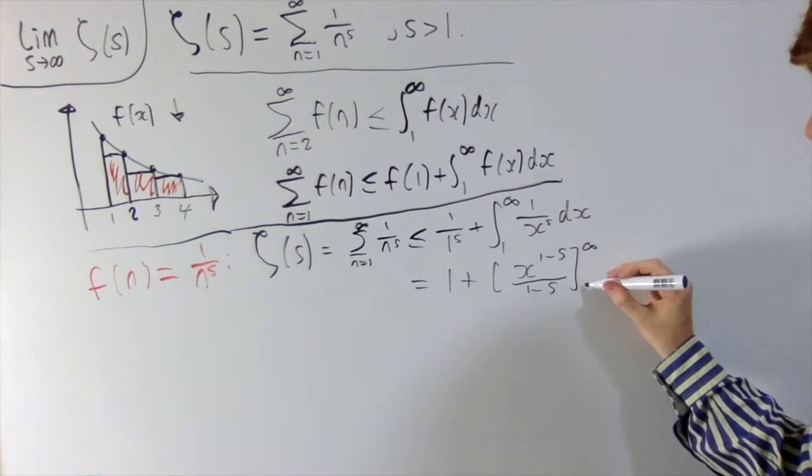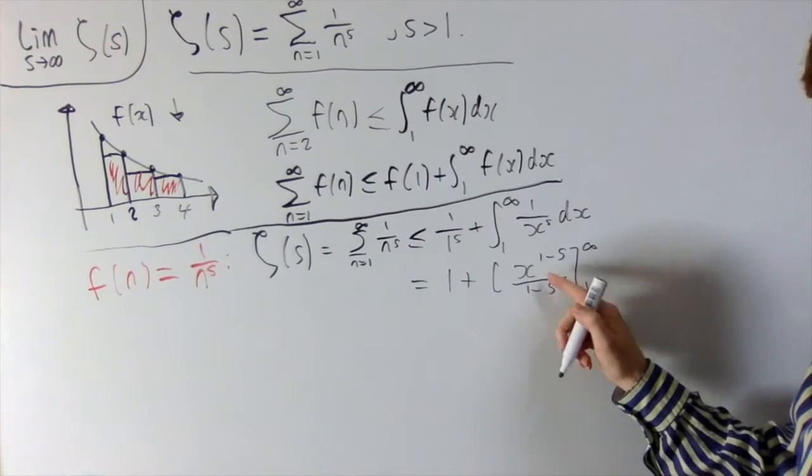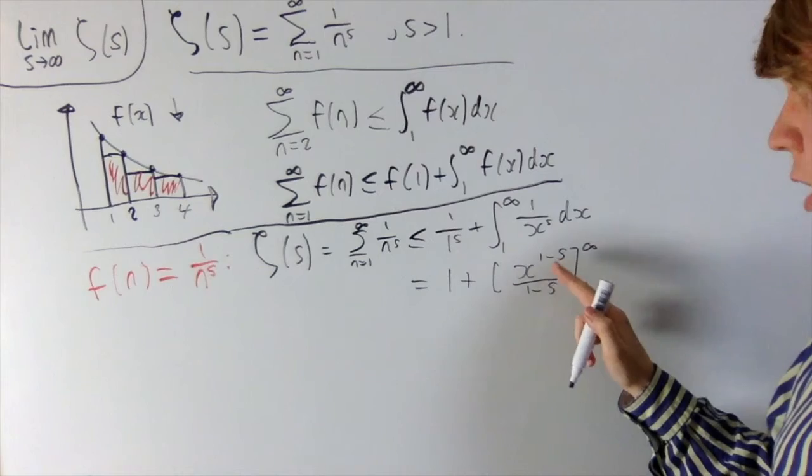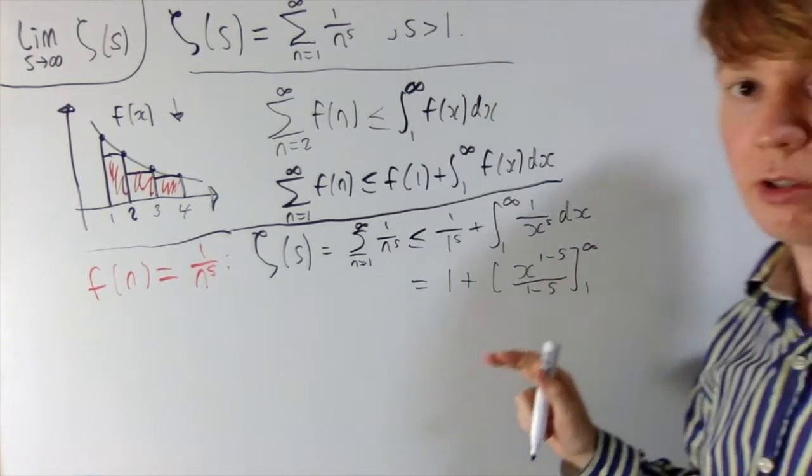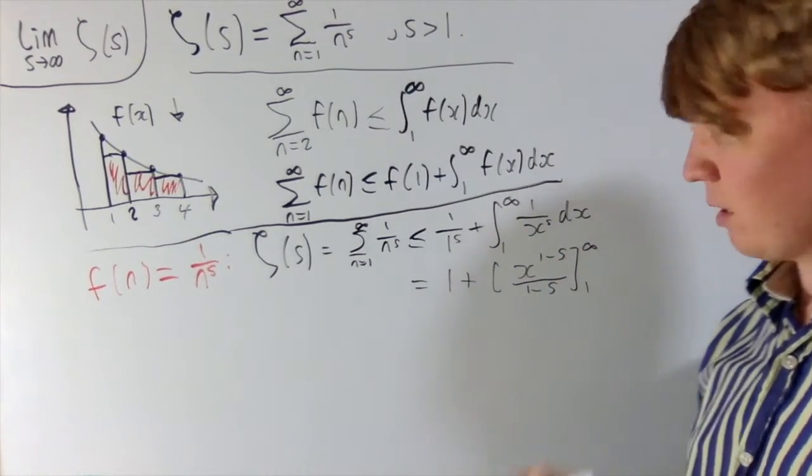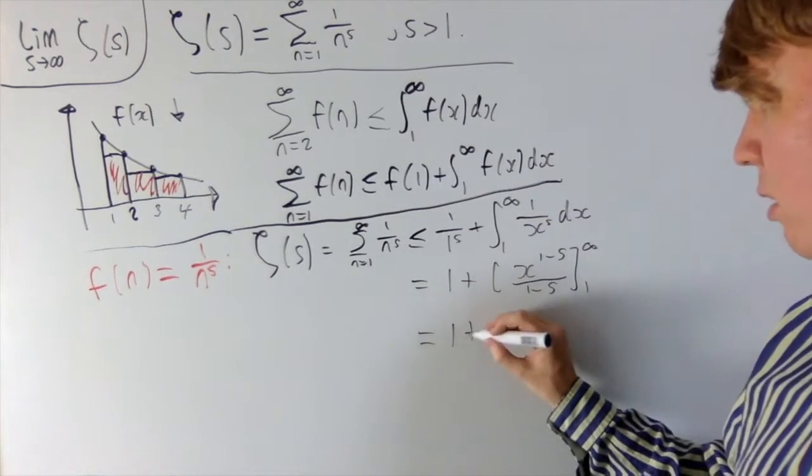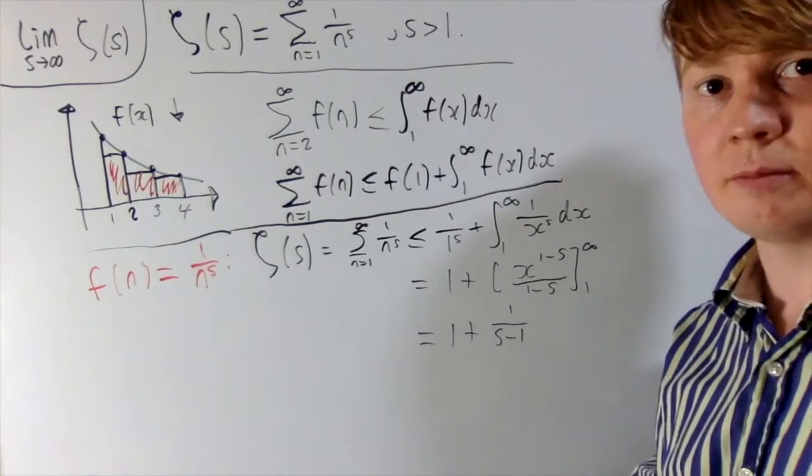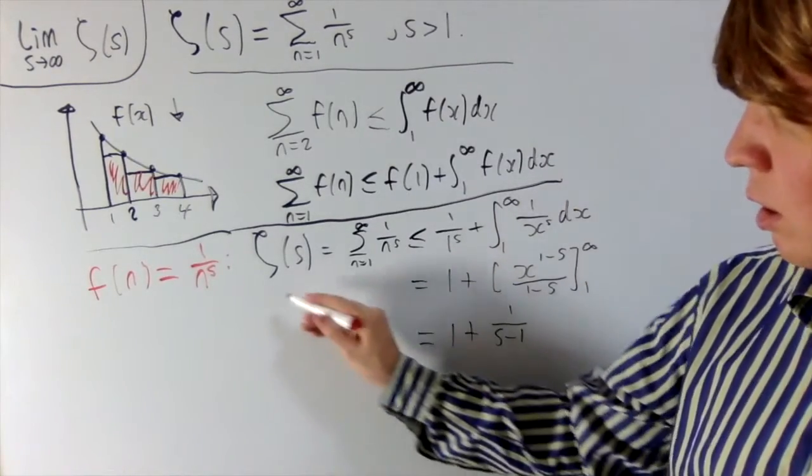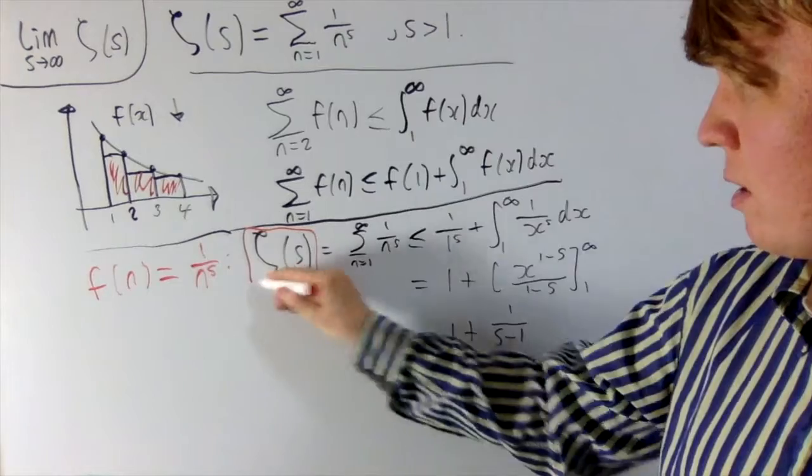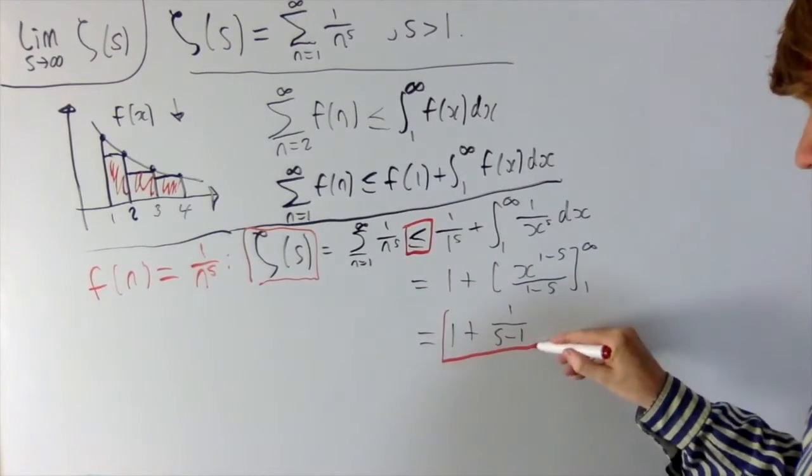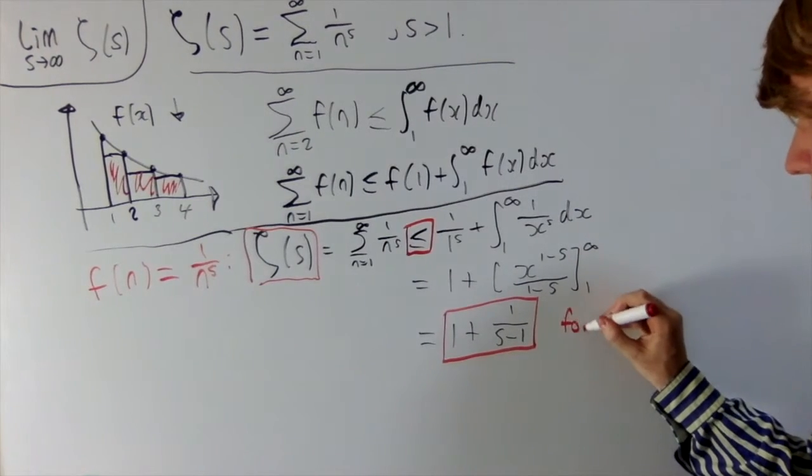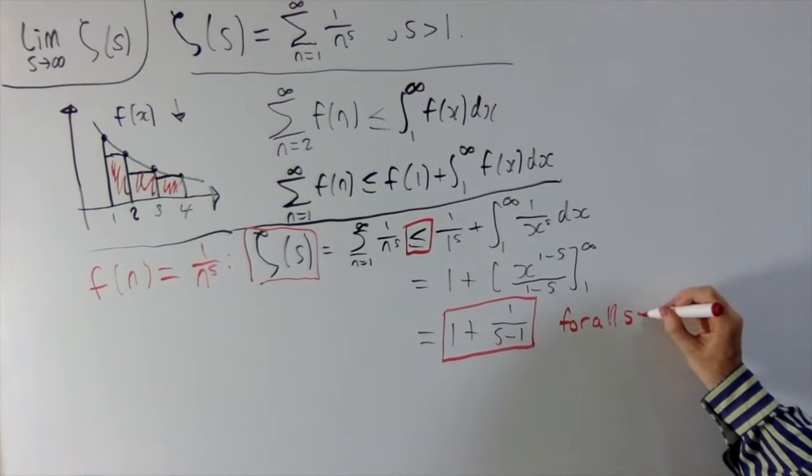Evaluating this, infinity and 1. So as x goes to infinity, this term will converge to 0, and you can see that just because s is greater than 1, so this is a negative power. So you don't get a contribution at infinity. And then when x is 1, it turns out that you'll just get 1 over s minus 1 as your contribution there, from that part of the integral. So what we've shown here is that zeta of s, this is less than or equal to 1 plus 1 over s minus 1, and this is for all s greater than 1.